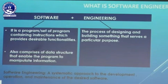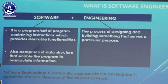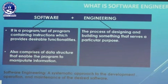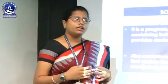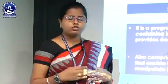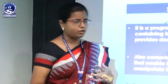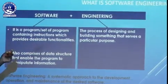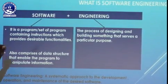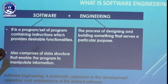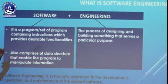Looking at the name 'software engineering,' there are two terms: software and engineering. Engineering is the process of designing or building something that serves a particular purpose — at the beginning of a process we desire some output, we follow a set of processes, and we get a desired output. Software is a program or set of programs containing instructions. Just as engineering is defined as a set of processes, software is defined by a set of programs containing instructions that provide desirable functionalities.